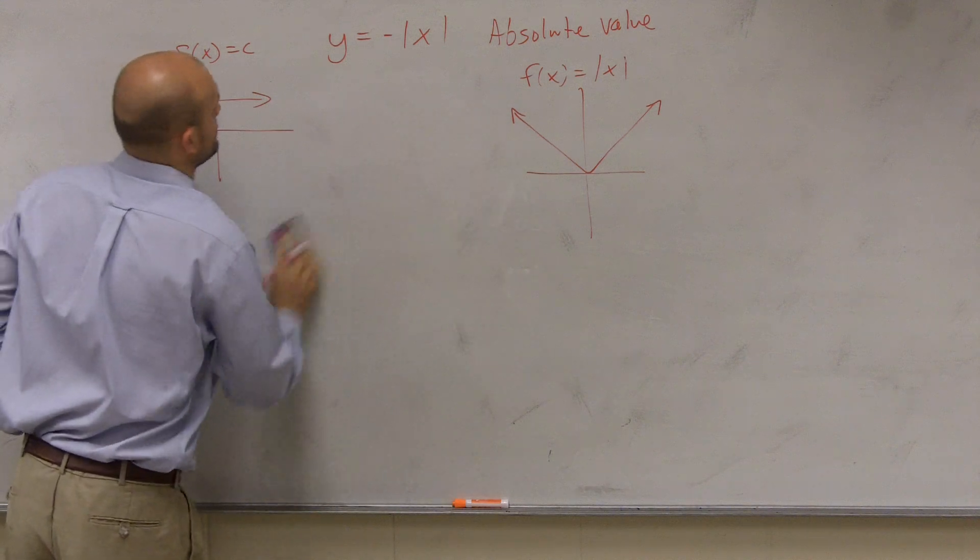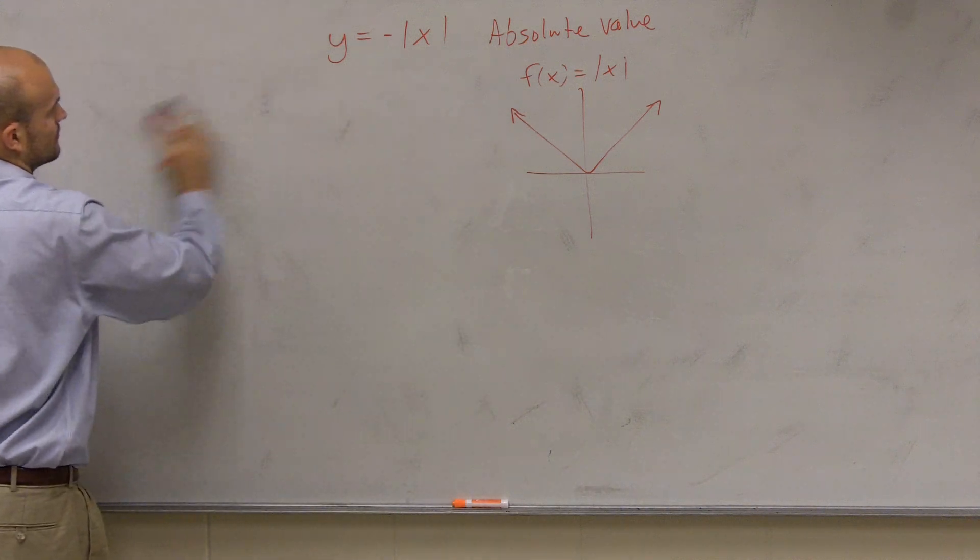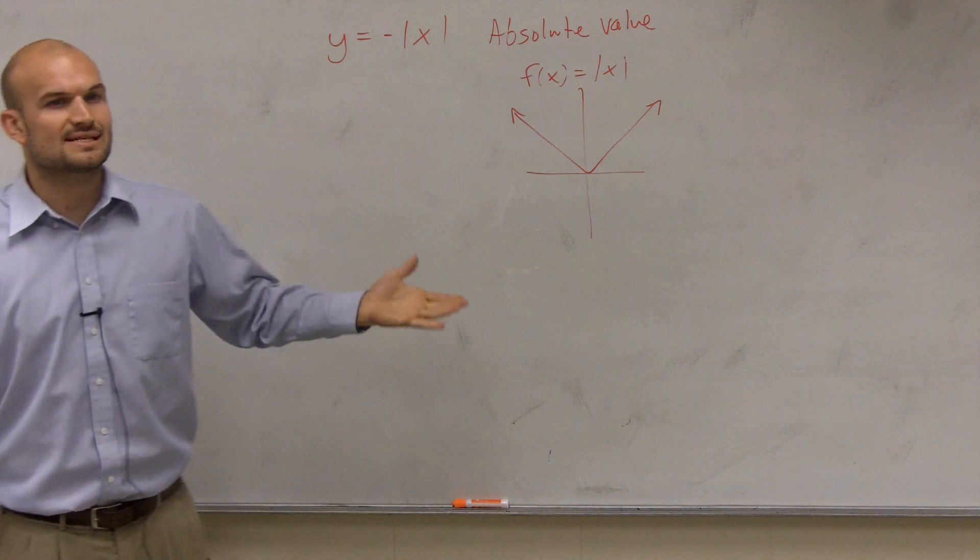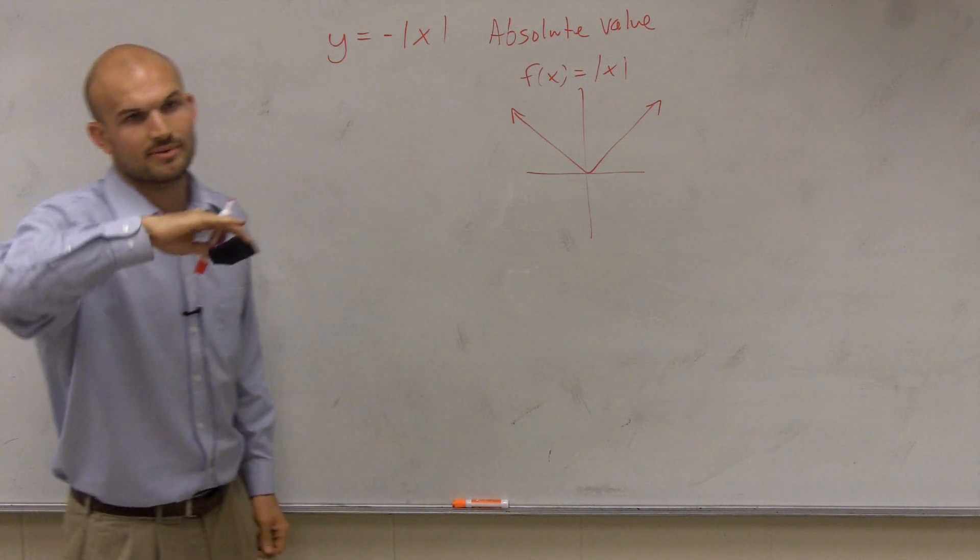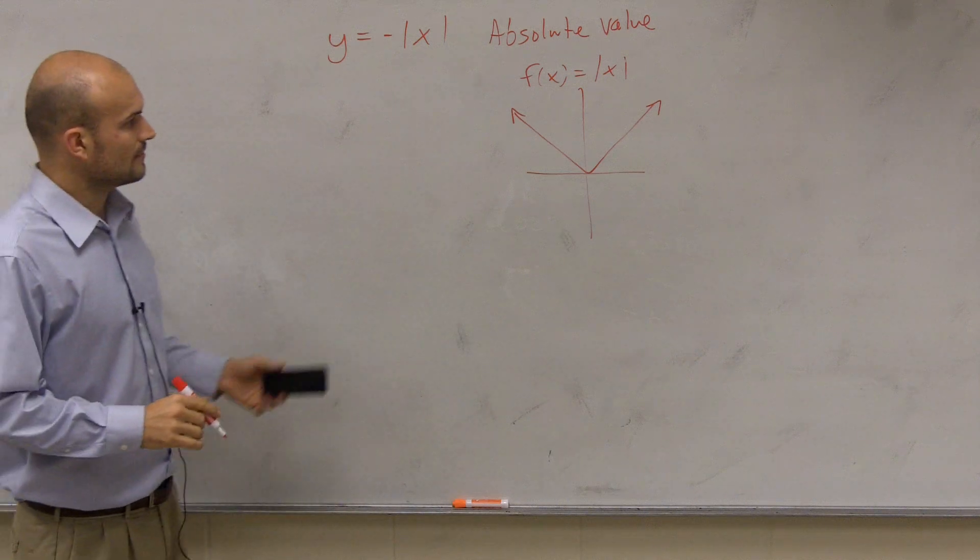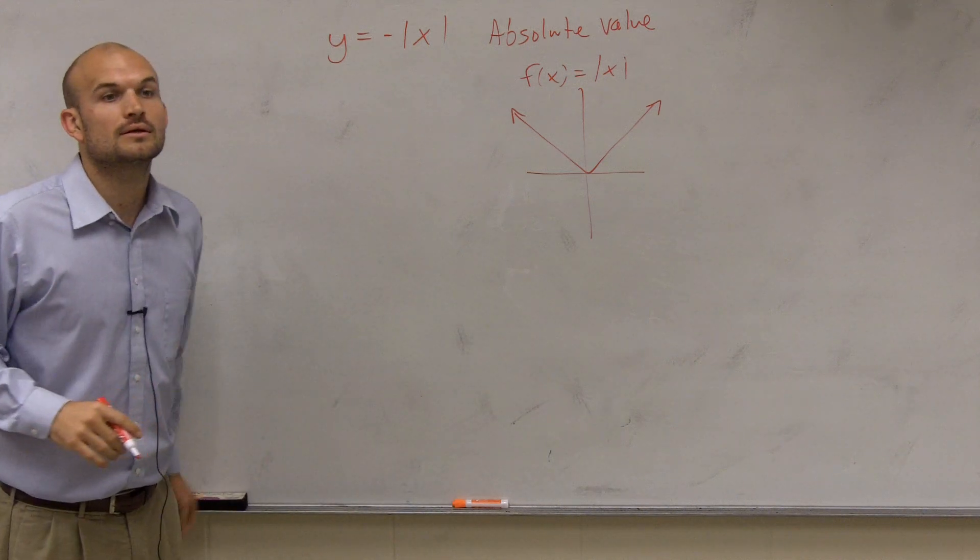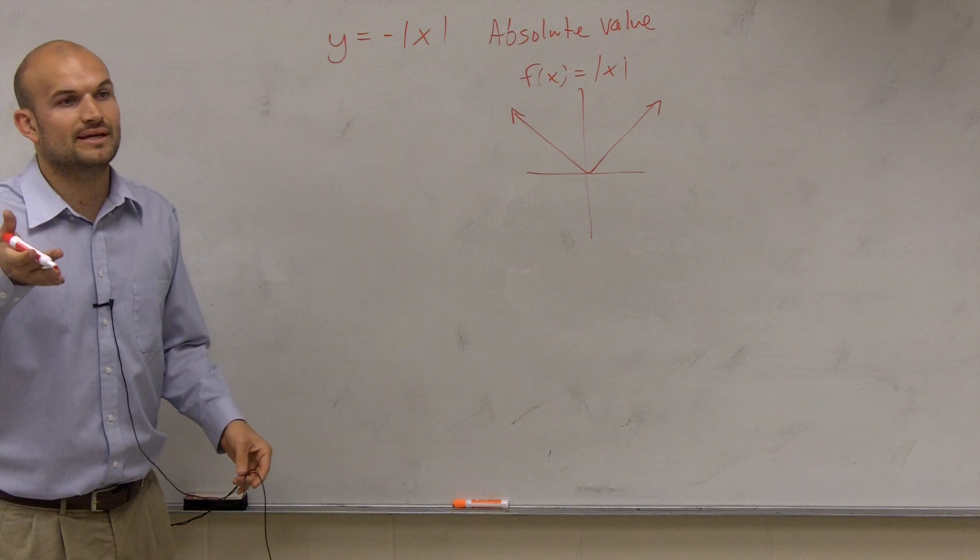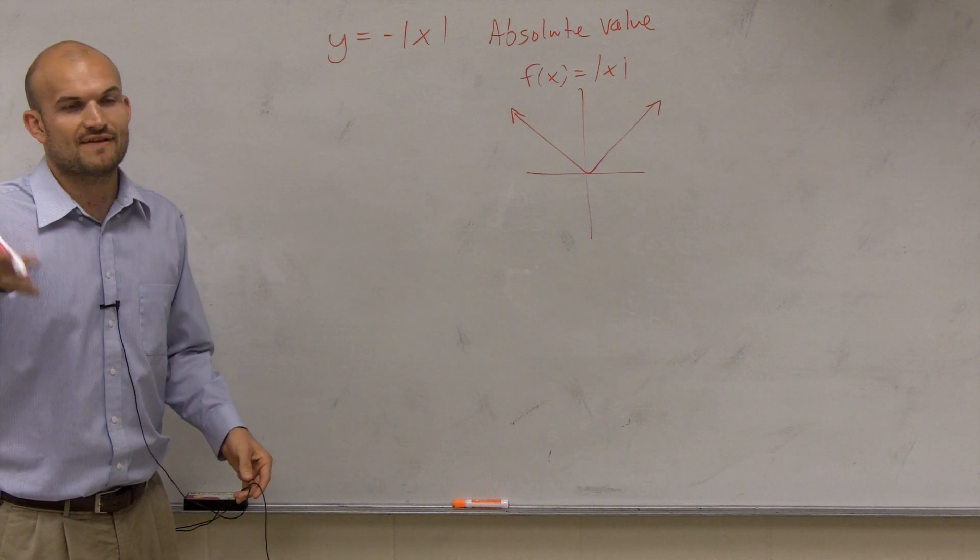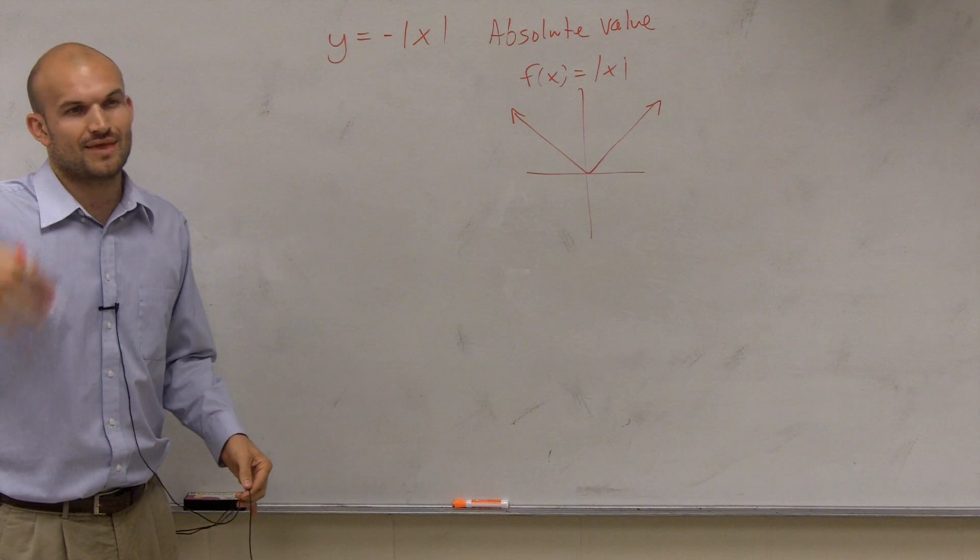I have a quick question about the function. Is that f of x equals c? Yeah, c is a constant. So it could be any number, like f(x) equals 5. And that would have been a horizontal line. A vertical line would be like when x equals 5 or x equals negative 2, that would be a vertical line.